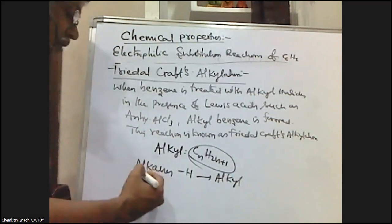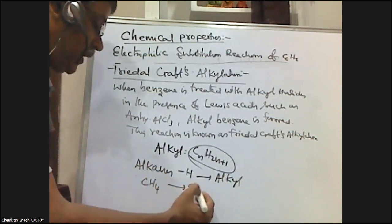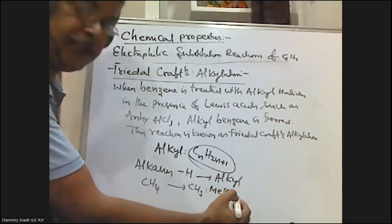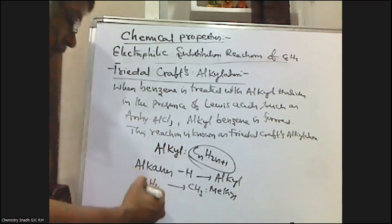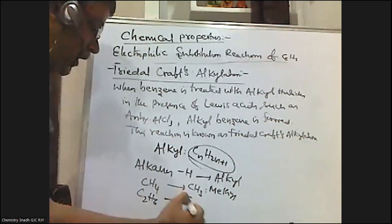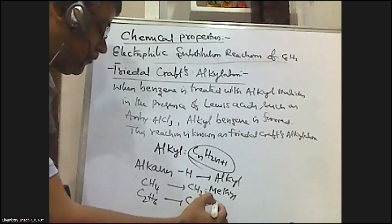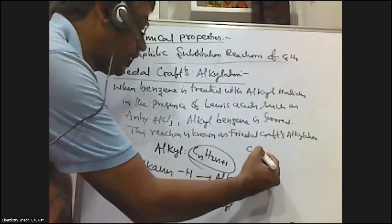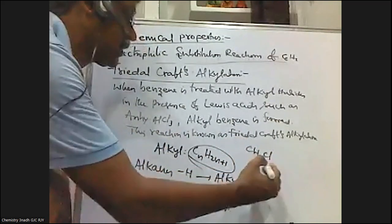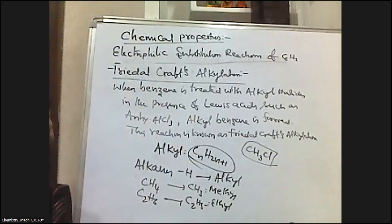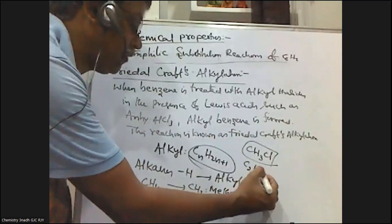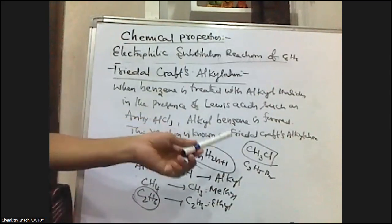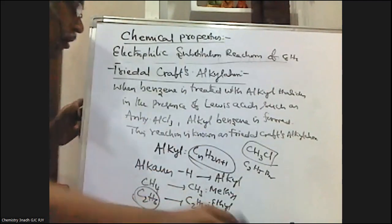For example, methane CH4 — if one hydrogen is removed, the resulting group is called methyl. Similarly, ethane C2H6 — if one hydrogen is removed, C2H5, this group is called ethyl. So if in methane one hydrogen is replaced with a halogen, it is called methyl chloride. Similarly, in C2H6 one hydrogen is replaced with bromine, that is why it is called ethyl bromide.